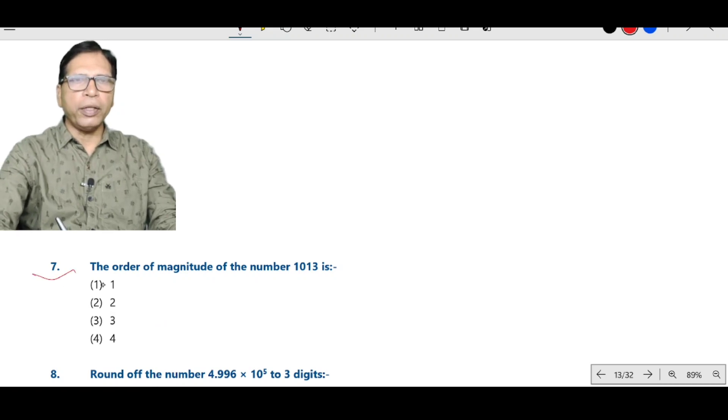Now question 7. The order of magnitude of the number 1013. This number can be expressed as 1.013 into 10 to the power 3. So 3 is the order of magnitude.